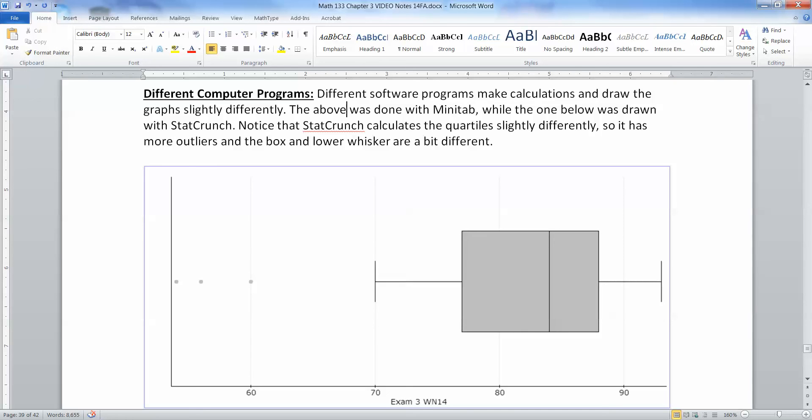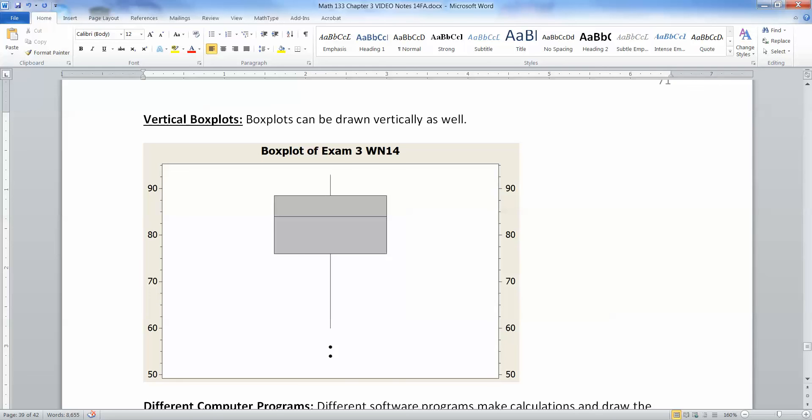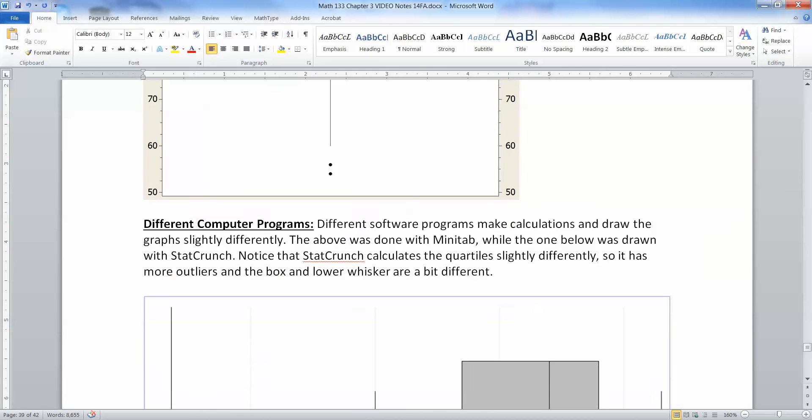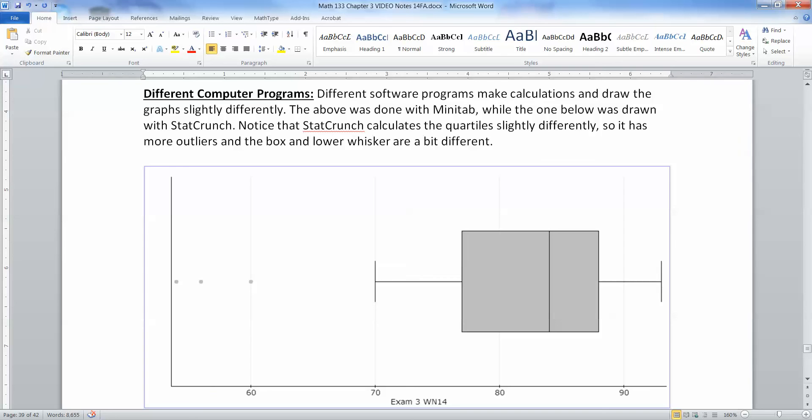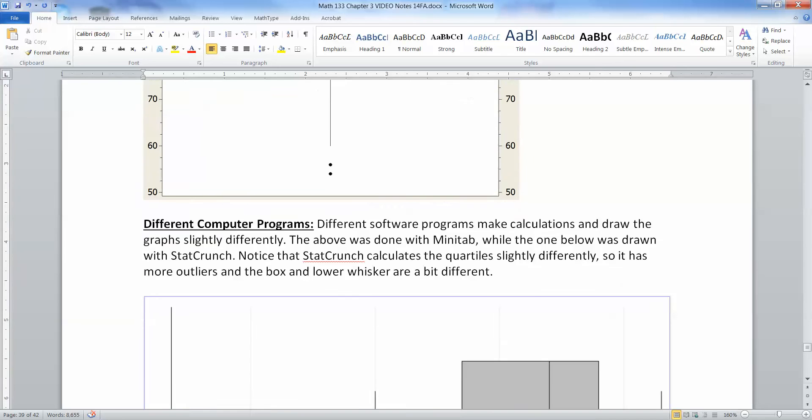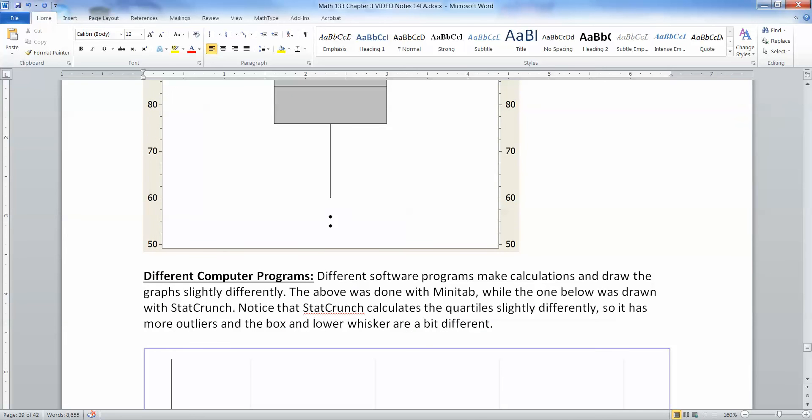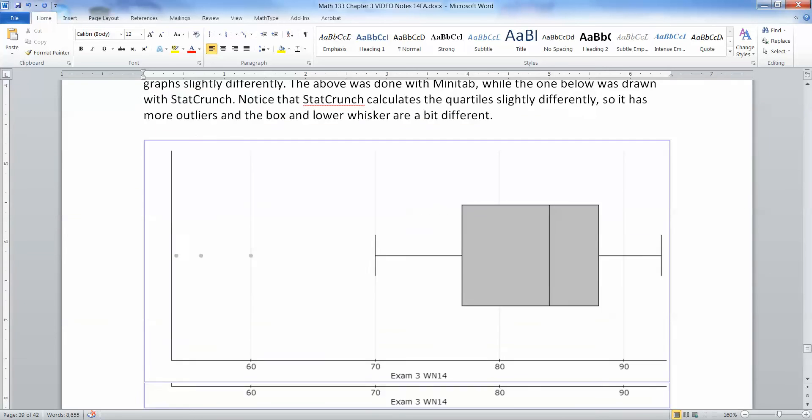For example, StatCrunch, which is another program that we use, calculates quartiles differently. And so that means it finds the whiskers differently and the fences and the outliers. So according to StatCrunch, 60 was an outlier as well, which it wasn't that way according to Minitab and the calculator. So that's okay. Just whatever picture is given to you, go with it, right? And work with it. So in this case, 60 was an outlier. In our case, 60 wasn't. And that's just a difference in how the computer programs treat them.